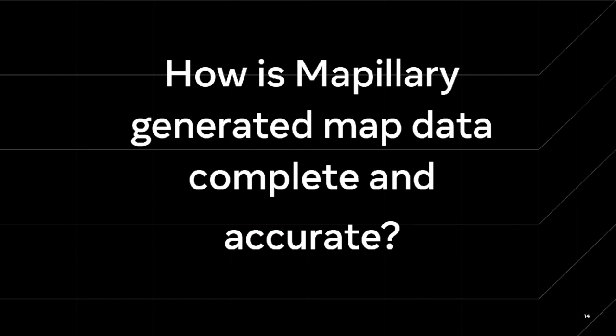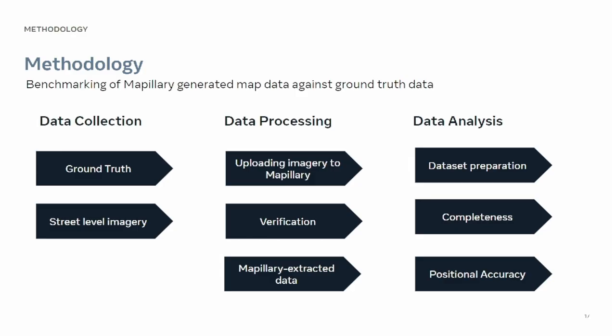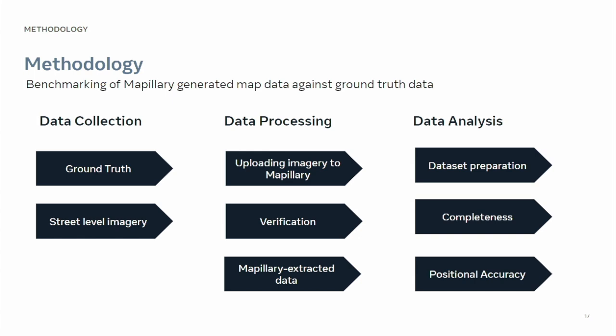In this part we are focusing on quality and completeness of Mapillary data. My methodology: I collect street-level imagery in the area of interest, ground truth data is provided by the municipality in the area of interest, images are uploaded to Mapillary, I coordinate verification to remove false positives, extract map data, prepare a dataset, and then analyze completeness and positional accuracy.